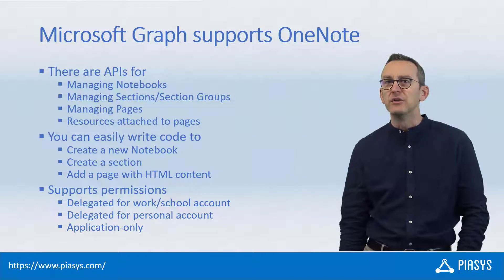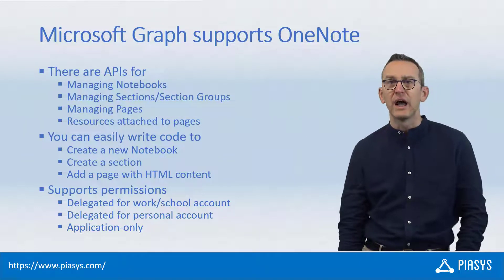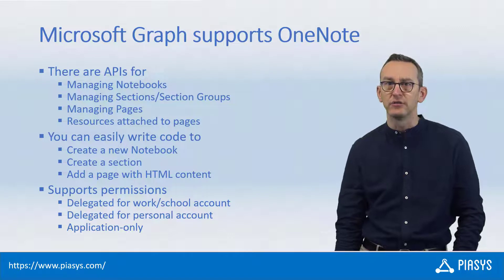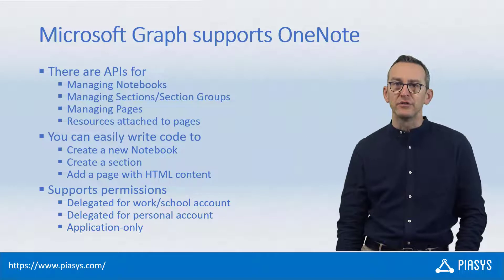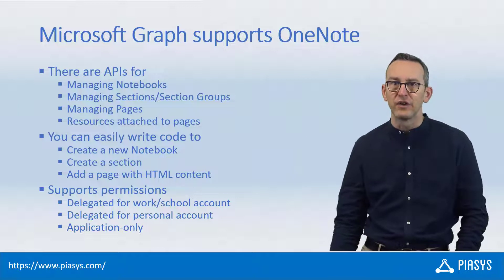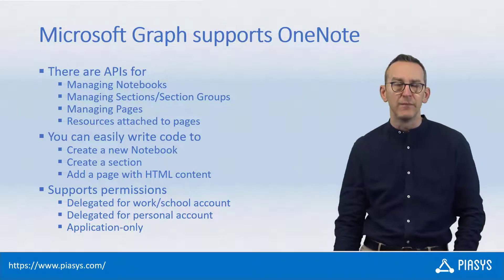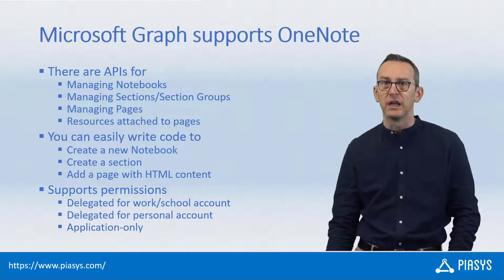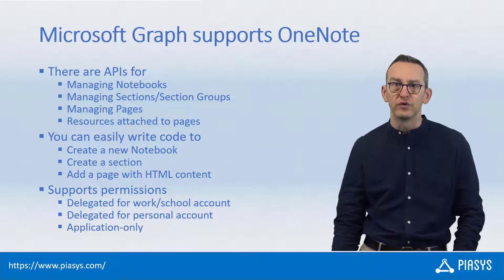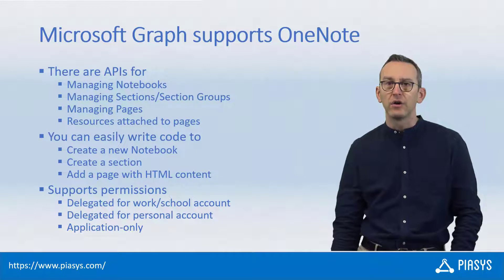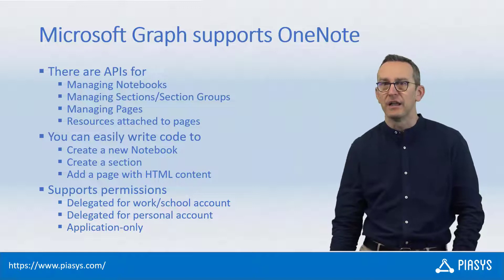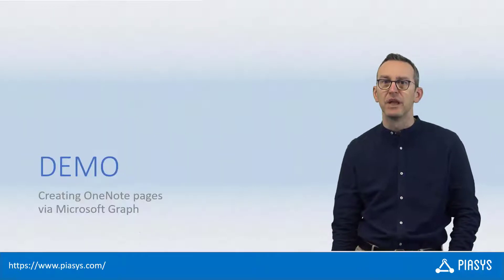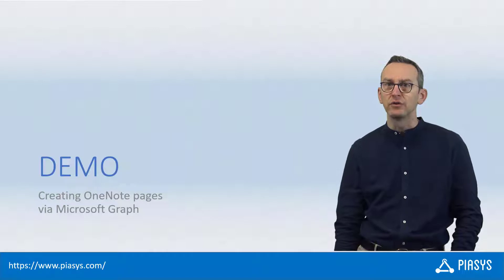Using the Microsoft Graph API, you can easily create a new notebook, add a section to the notebook, and add a page with content to that section. From a security point of view, you can use a delegated access token for a work or school account if the OneNote notebook is in OneDrive for Business or SharePoint Online. You can use a delegated personal access token to manage OneNote notebooks stored in OneDrive personal. Or you can use an application-only token for a daemon running in the background, like in Azure Functions. Let me move to the demo environment to show you how to do that in practice.